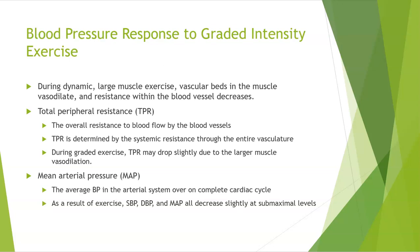During dynamic large muscle exercise, vascular beds in the muscle vasodilate and resistance within the blood vessel decreases. Total peripheral resistance, or TPR, is the overall resistance to blood flow by the blood vessels, determined by systemic resistance through the entire vasculature. During graded exercise, TPR may drop slightly due to large muscle vasodilation. Mean arterial pressure, or MAP, is the average blood pressure in the arterial system over one complete cardiac cycle. As a result of exercise, systolic blood pressure, diastolic blood pressure, and mean arterial pressure are all decreased slightly.